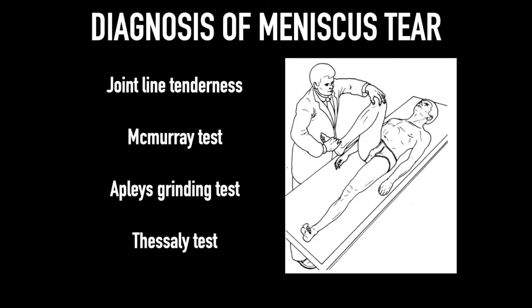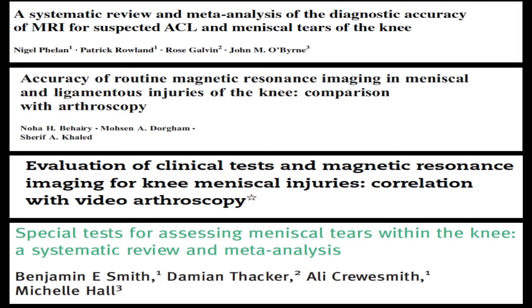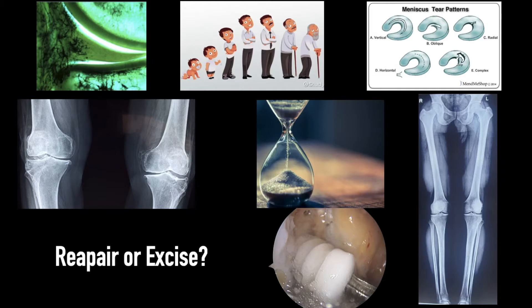There are many tests available for the diagnosis of a meniscus tear — joint line tenderness, McMurray's test, Apley's grinding test, and the Thessaly test — but according to the literature, none of these tests are very sensitive or specific. Systematic reviews and meta-analyses show the diagnostic accuracy of MRI for ACL and meniscus tears, but most literature concludes that clinical examination and MRI are not so sensitive and specific, and the final diagnosis is always made during arthroscopy.